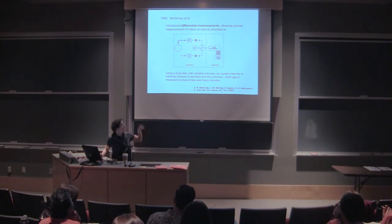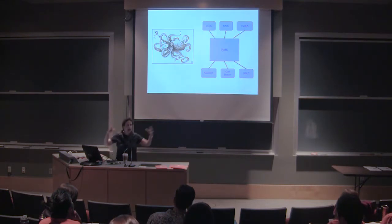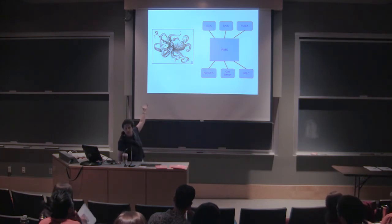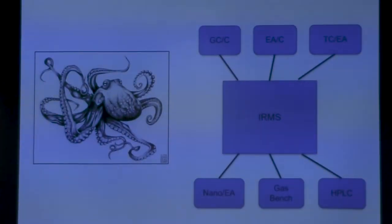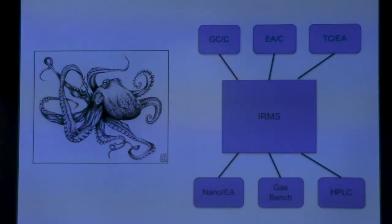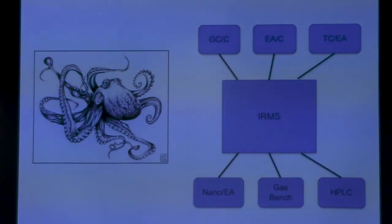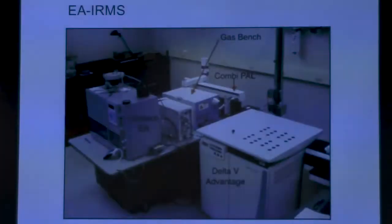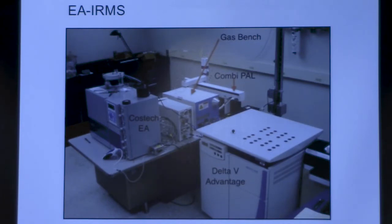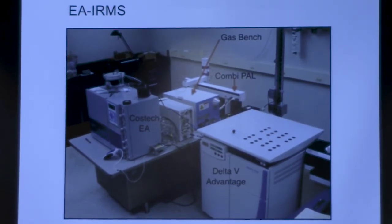Instead of a two-armed inlet system we now have a many-armed instrument — like an octopus. On the right is another kind of octopus: we now have all these different devices that can convey sample into the IRMS through continuous flow techniques. Octopuses are really cool by the way — amazing animals — but I digress. There's a whole fleet of instruments upstairs. Here's a picture of one at Penn State: the instrument is on the lower right and there are three inlet systems on that particular setup. You can switch back and forth between them — incredible versatility, all tied to continuous flow inlet systems.